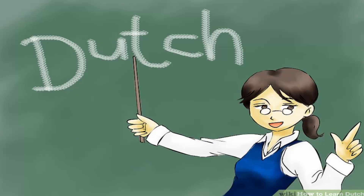Now suppose the other person did not quite catch your name. Here's how she would ask you to repeat it. Wat zegt u? She's literally asking, what say you? Here is the word for what: Wat. Here's the word which means say or are saying: Zegt. Pay careful attention to the ending — it's a combination of the ending of dag followed by a T sound. Repeat the whole question: Wat zegt u?